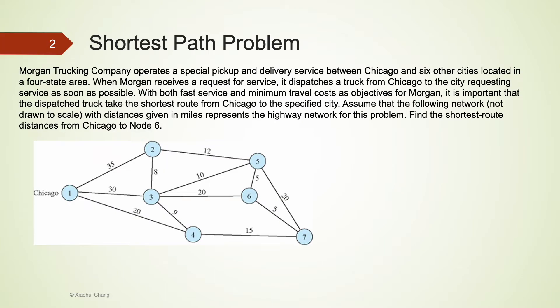Morgan Trucking Company operates a special pickup and delivery service between Chicago and six other cities. When Morgan receives a request for service, it dispatches a truck from Chicago to the city requesting service as soon as possible. With both fast service and minimum travel costs as objectives, it is very important that the dispatched truck takes the shortest route from Chicago to the specified city. Assume that the following network, not drawn to scale, with distances given in miles represents the highway network for these problems. Find the shortest route distances from Chicago to node 6.